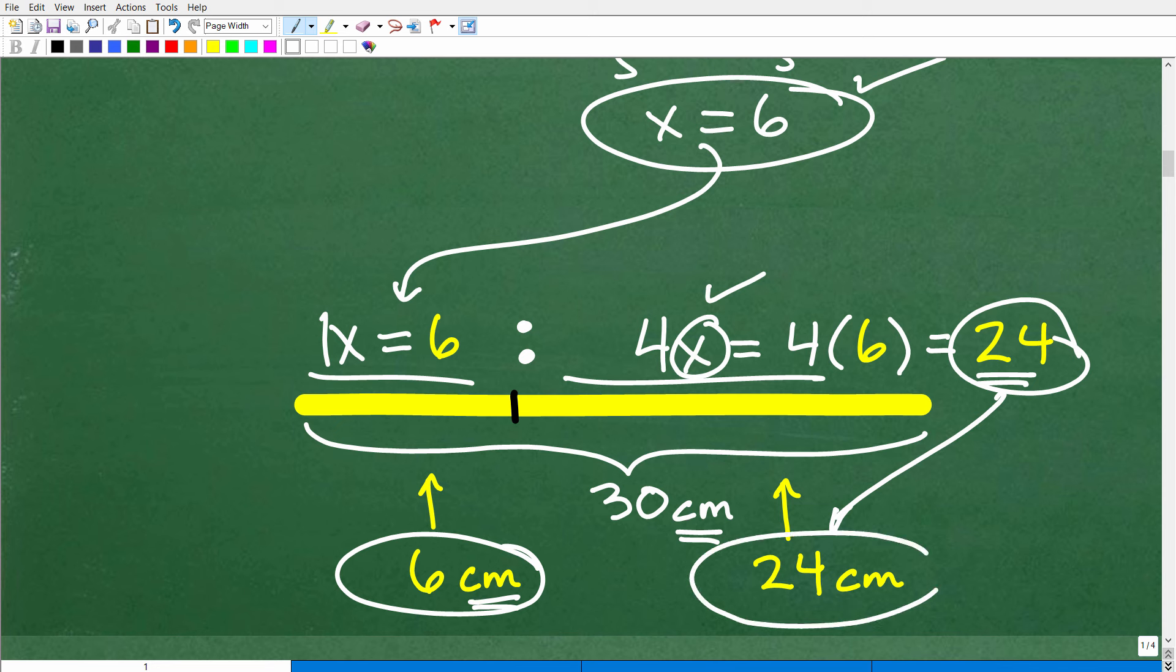Now, let's just go ahead and think about this. Does this make sense? Well, 6 plus 24, this total length, in fact, does equal 30. So it definitely makes sense there. But let's double check that 6 and 24, that these two lengths are, in fact, at a 1 to 4 ratio.